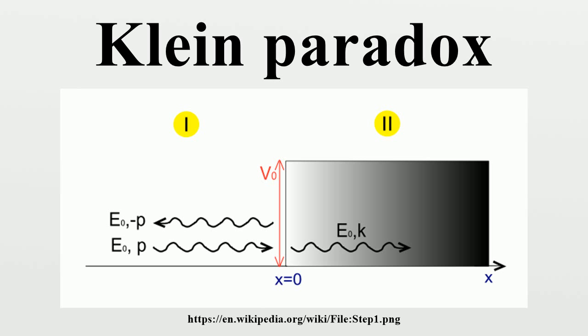the paradox presented a quantum mechanical objection to the notion of an electron confined within a nucleus. This clear and precise paradox suggested that an electron could not be confined within a nucleus by any potential well. The meaning of this paradox was intensely debated at the time.